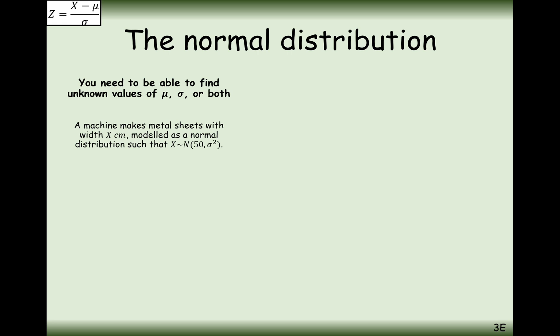In this next question, a machine makes metal sheets with width X modelled as a normal distribution, where X is normally distributed with a mean of 50 and an unknown standard deviation. Part A: given that the probability of X being less than 46 is 0.2119, find the value of the standard deviation.